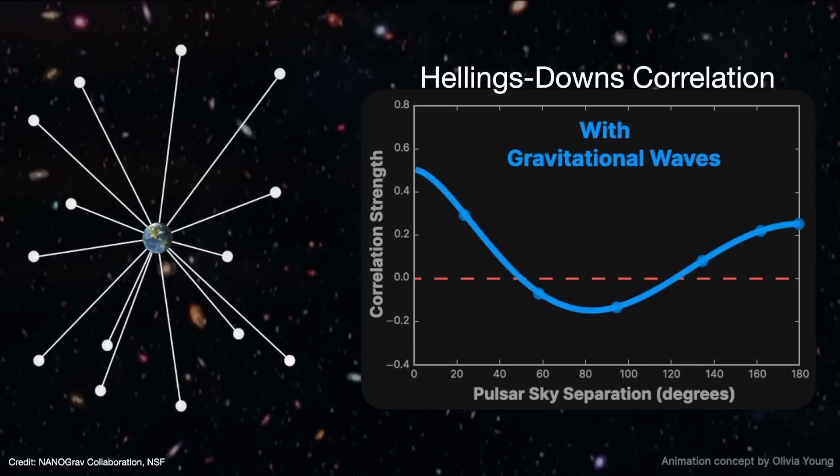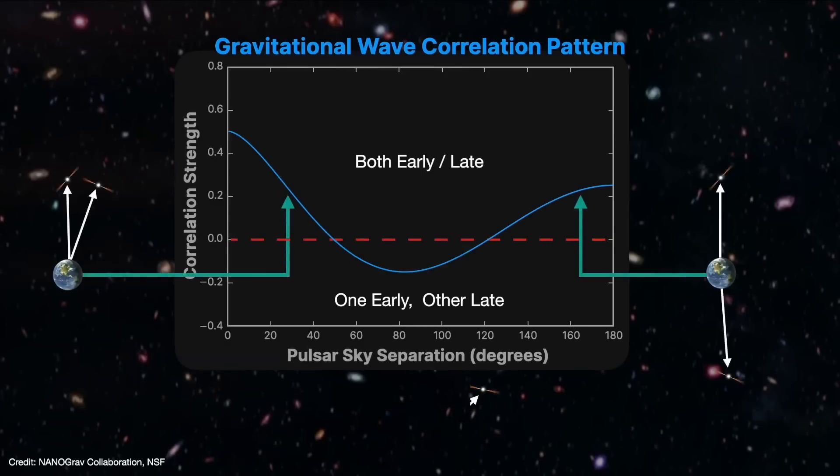It says that if two pulsars are close to each other in the sky, they tend to have similar timing changes as the gravitational waves pass through. Namely, they'll either both arrive early, or they'll both arrive late. But if they're far apart in the sky, the timing changes are less similar. Typically, one arrives early while the other arrives late. So what does the data show?